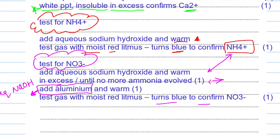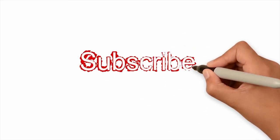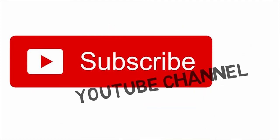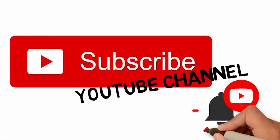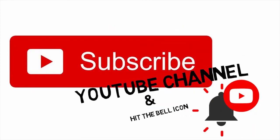So both ammonium and nitrate ions produce ammonia gas, and these tests allow us to confirm each one. I hope you have learned it well. In the next lecture we are going to learn how to identify more ions. Till then, stay blessed. Signing off, Miss Aisha Manzoor.